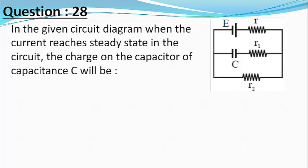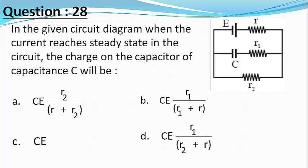Our choices are: CE into R2 divided by R plus R2, CE into R1 divided by R1 plus R, CE, and CE into R1 divided by R2 plus R.